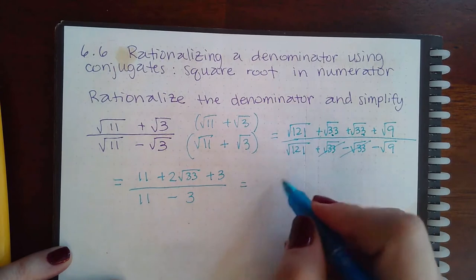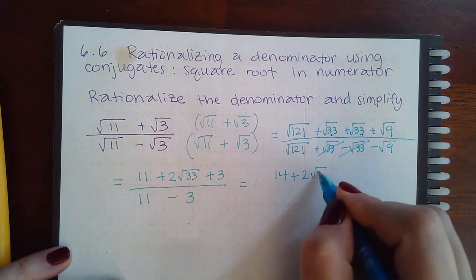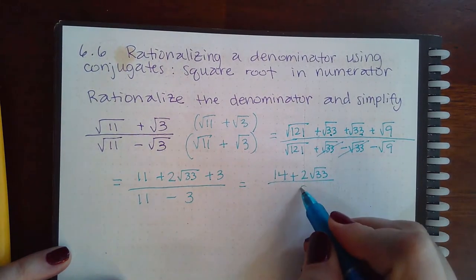If I add my constants here together, I get 14 + 2√33. And at the bottom, if I subtract that, I get 8.